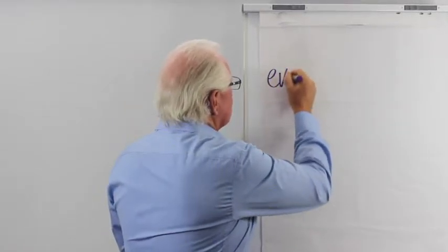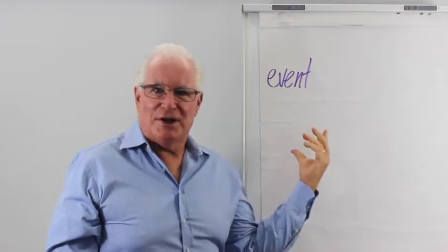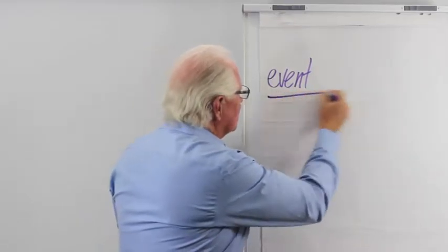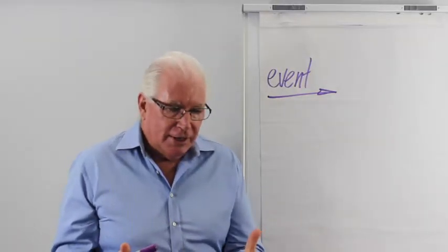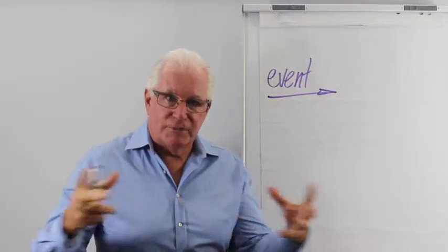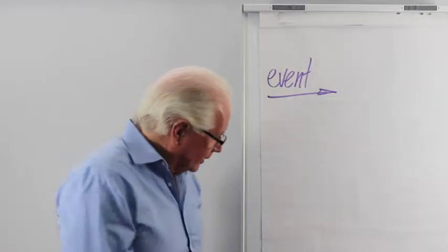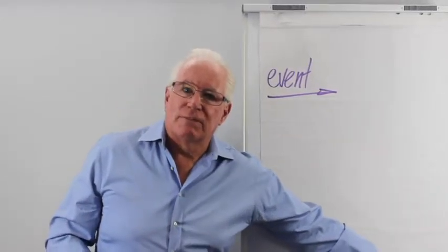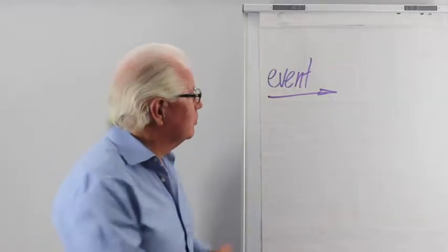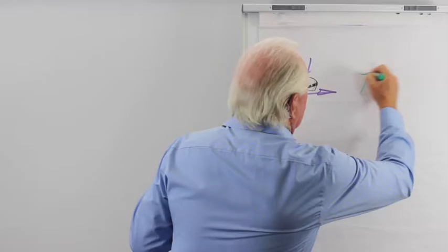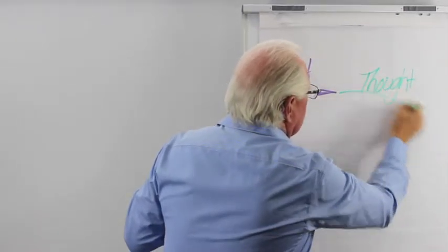We call it a negative spin cycle. What it starts with is an event. I should have said a set of circumstances, but there's not enough room to write that on my board. Something comes into our life, for example we get an invitation to a party. The invitation comes in the mail or somebody rings us up or texts us and says come to the party, and we immediately have a thought about that.